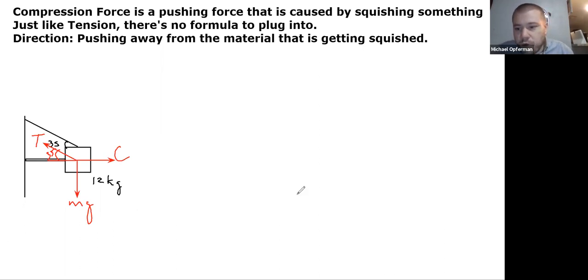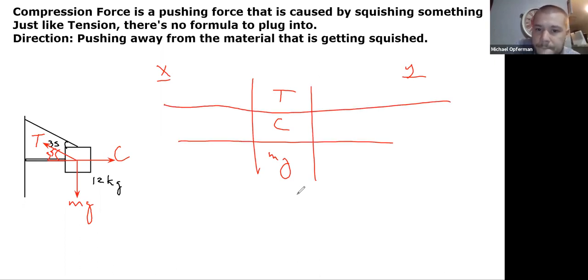This is a two-dimensional free body diagram, so we need to break it into components. We'll have X components, Y components, and you've got T, C, and mg as your three forces. The tension force X component is negative T cosine 35, the Y component is plus T sine 35. The compression force X component is plus C, the Y component is zero. And the gravitational force X component is zero, Y component is minus mg.